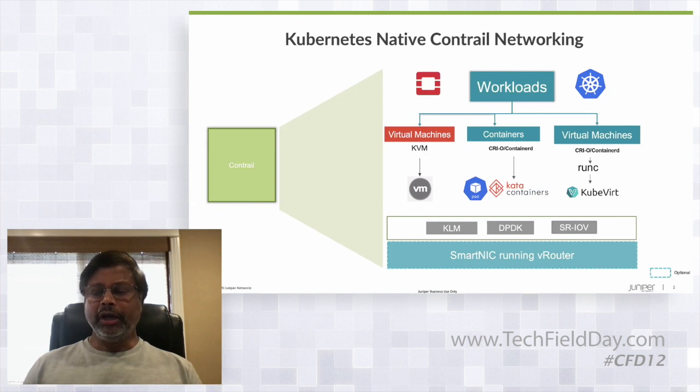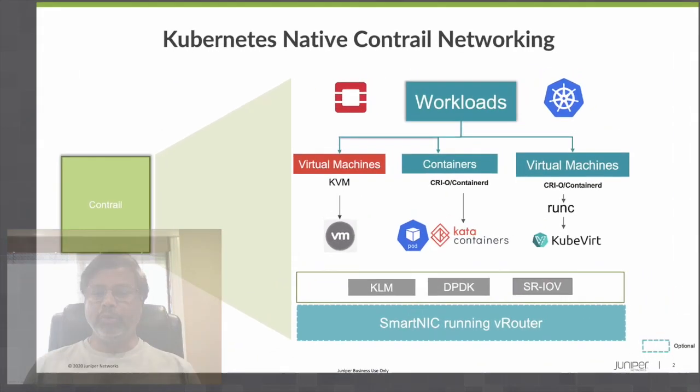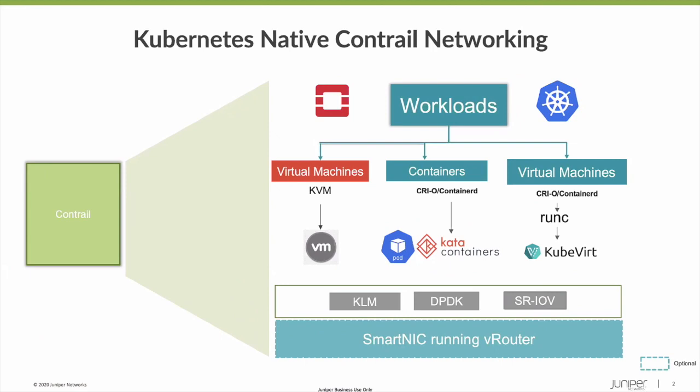For container workloads, if we need additional security, we support through Kata containers or equivalent. For OpenStack workloads, primarily virtual machines. And Contrail networking, when supporting, we have multiple options to do the data forwarding using the kernel loadable modules, or DPDK, SRIOV, and SmartNICs.